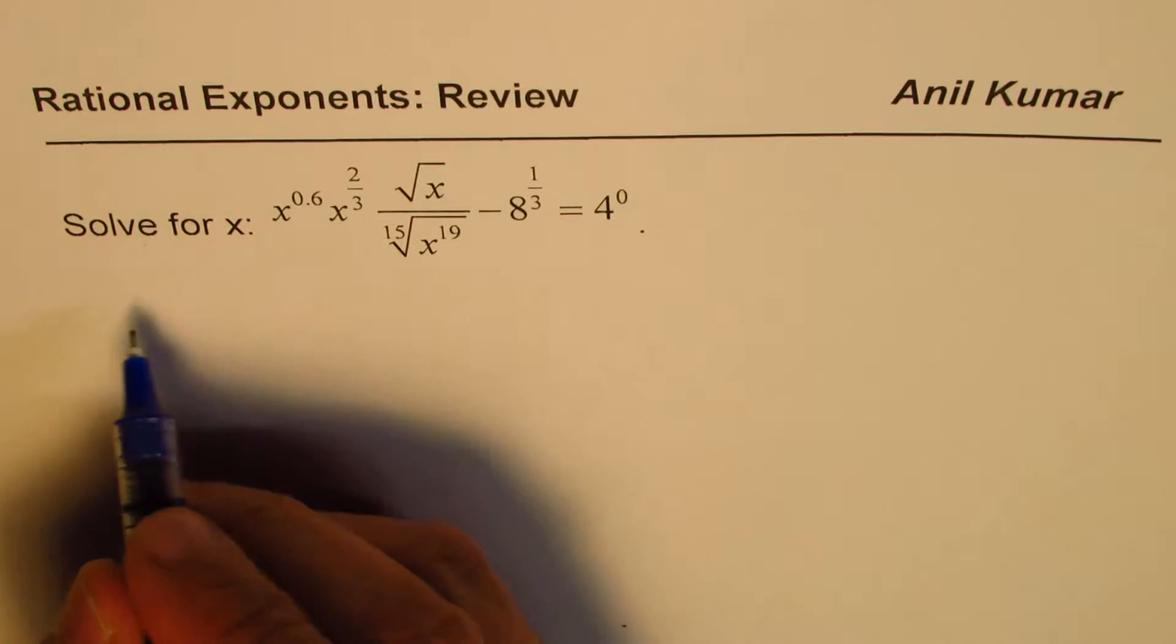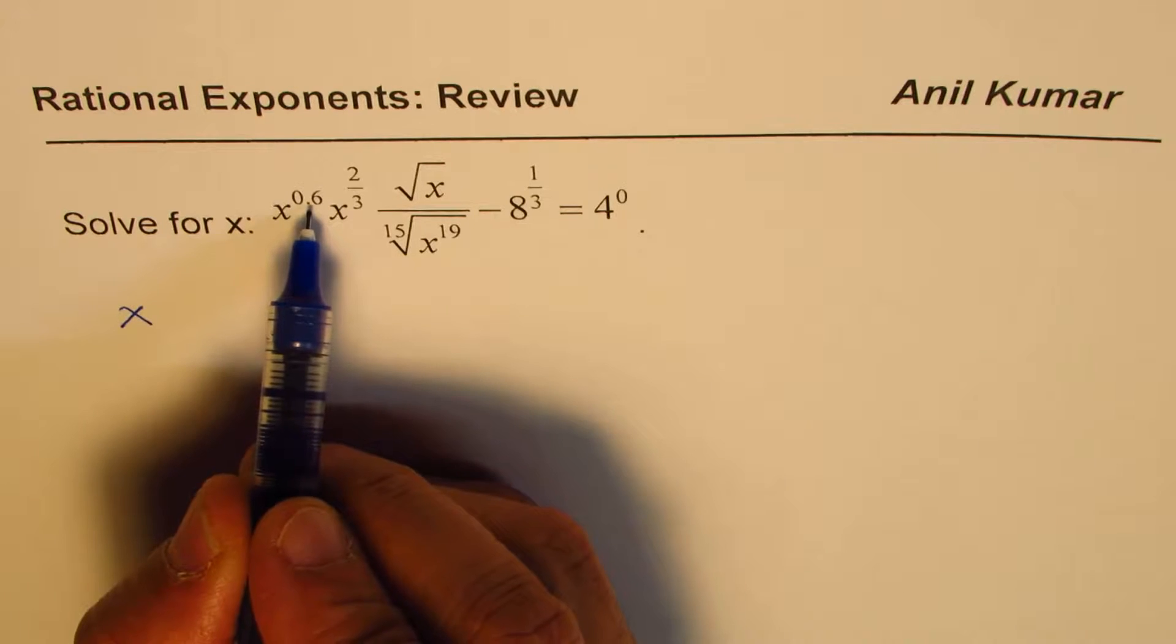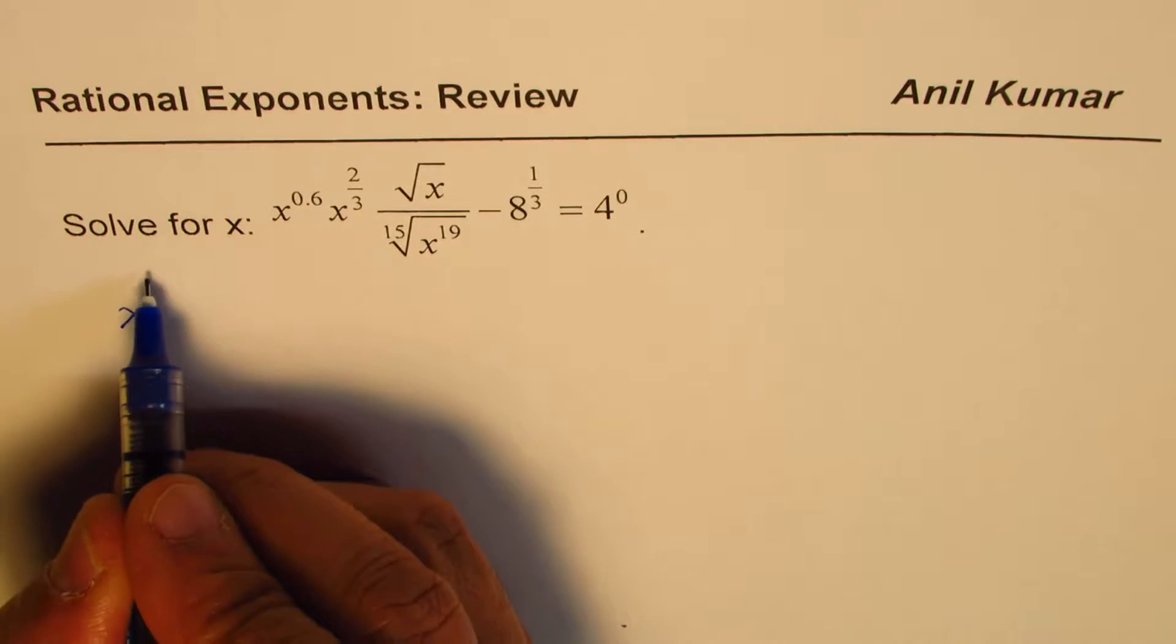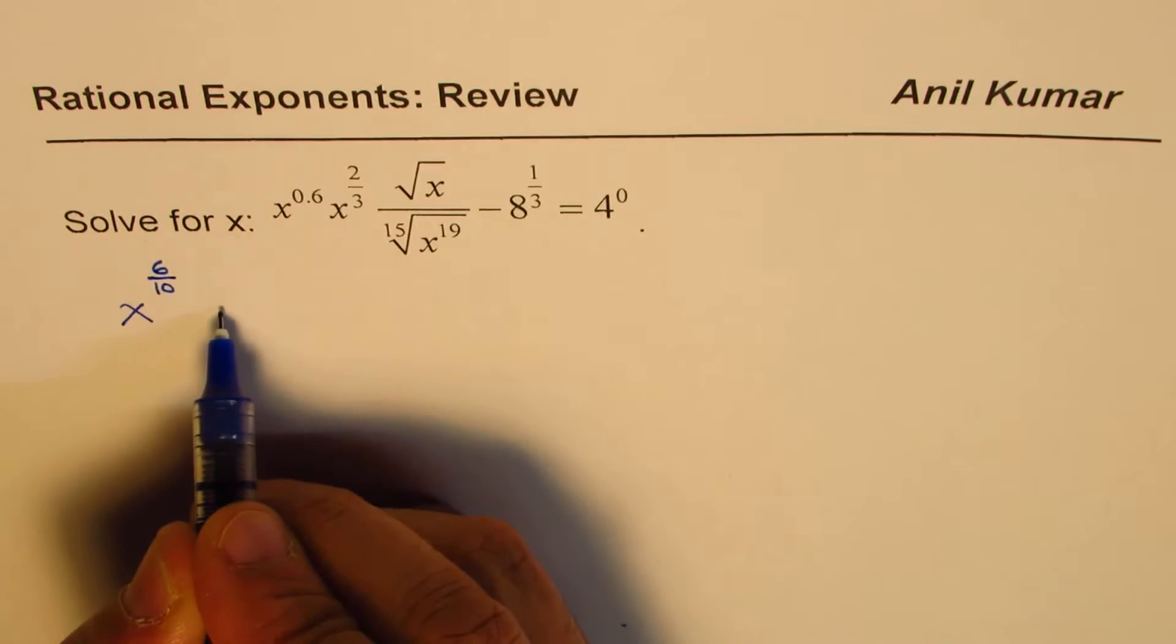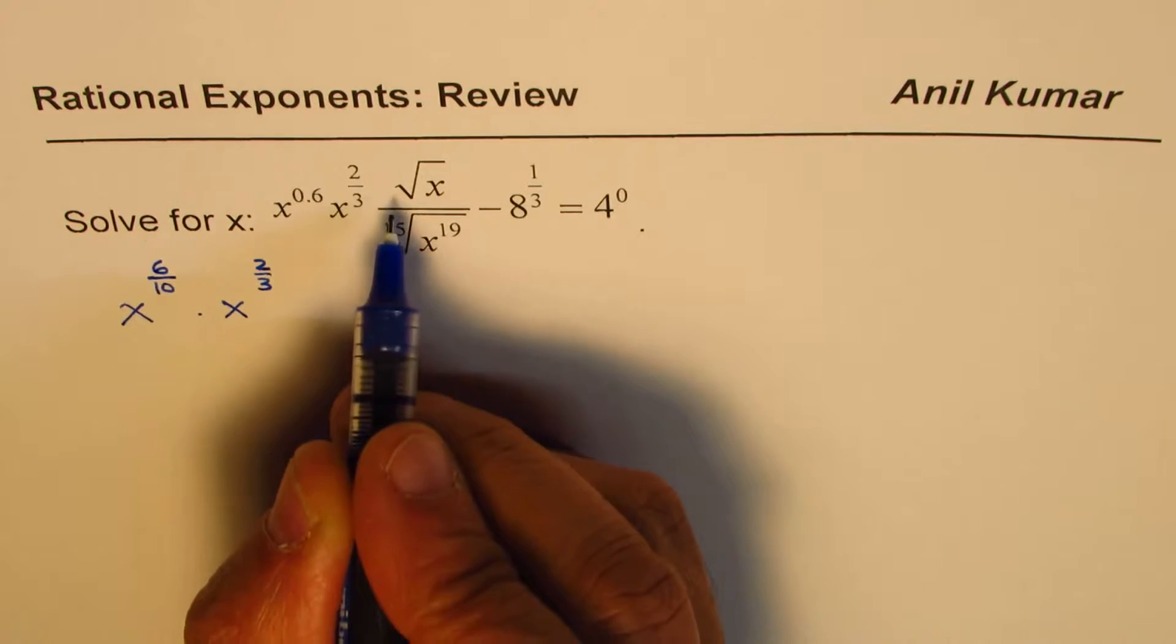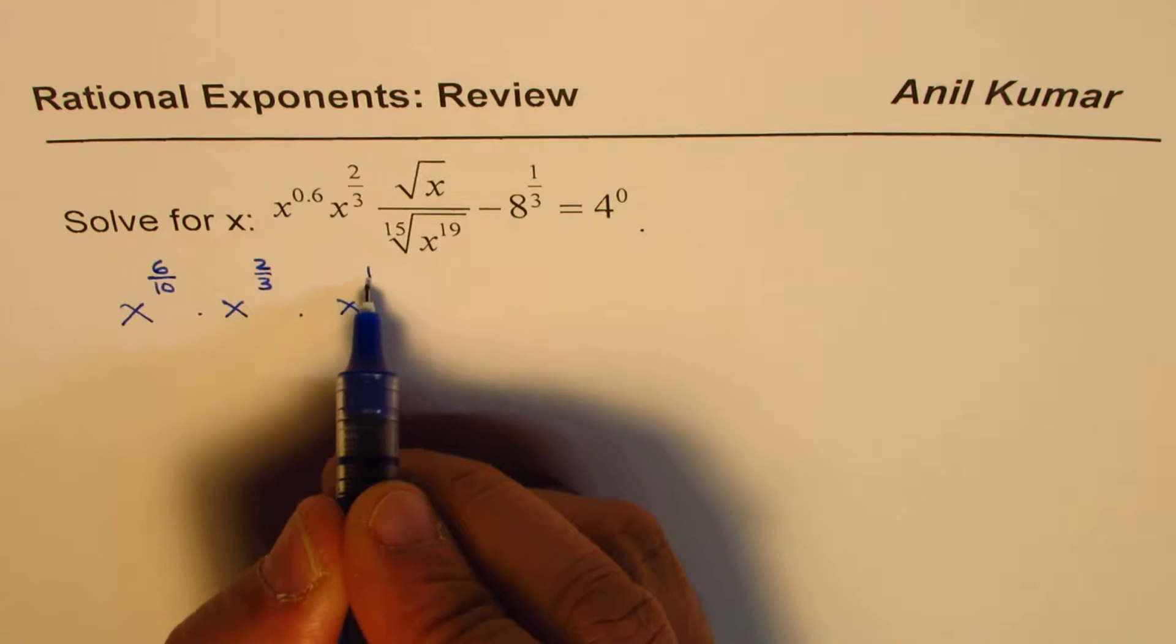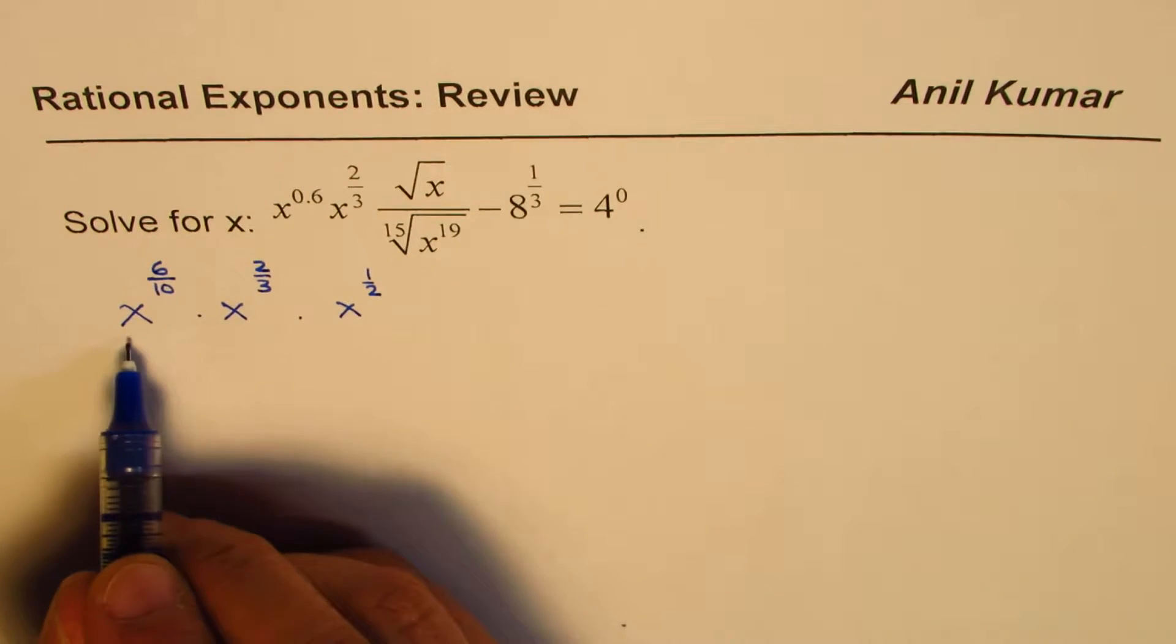Let's begin by writing these powers in one order. 0.6 means 6 over 10, so we write this as 6/10. Then we have x^(2/3), and then x^(1/2).